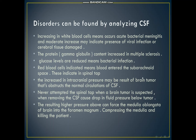An increase in intracranial pressure may be the result of a brain tumor, which obstructs the normal circulation of the cerebrospinal fluids. Never perform a spinal tap when a brain tumor is suspected. When removing suboccipital fluid, it causes a drop in fluid pressure below the tumor. The resulting high pressure above can force the medulla oblongata into the foramen magnum, compressing the medulla oblongata.